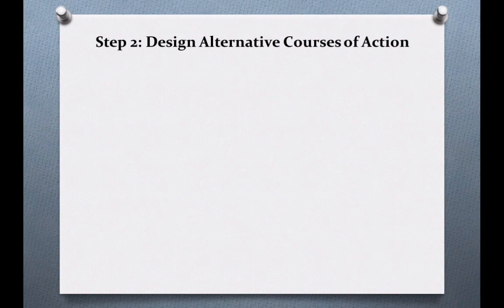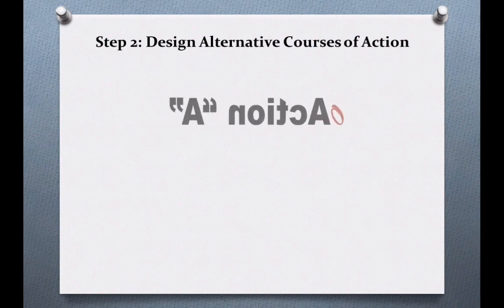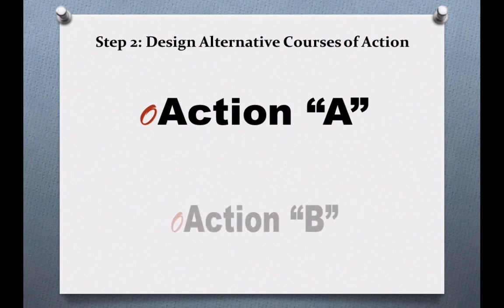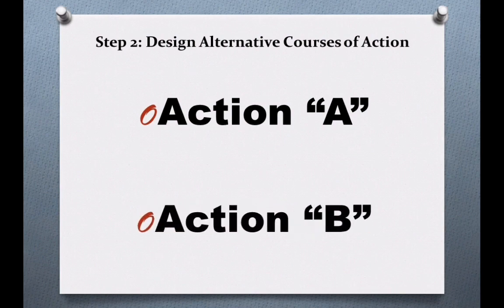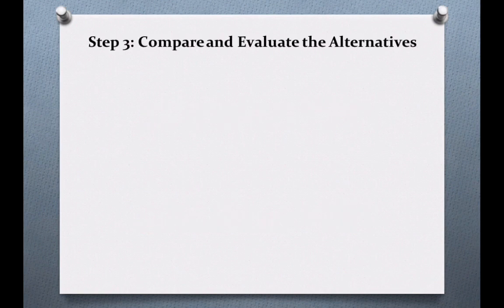Step 2: Design alternative courses of action. Action A was to conduct a classroom lesson on the importance of drinking pure water; the forecasted consequence was that students would become aware and inform their family members. Action B was to conduct a weekend session with parents, community members, and students led by doctors. The forecasted consequence was reaching the maximum number of people, and as it would be discussed by professional personnel, people would take it more seriously.